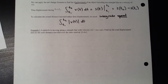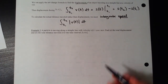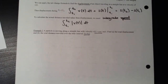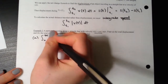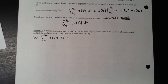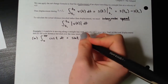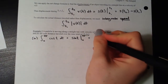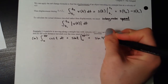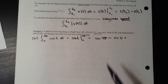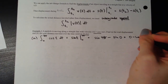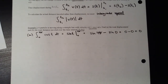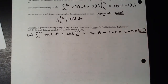Example three: we have a cosine velocity function from 0 to 4π and we want displacement and total distance traveled. For displacement, set up the integral from 0 to 4π of cosine dt. The antiderivative of cosine is sine, evaluated from 0 to 4π. Sine of 4π equals zero, and sine of 0 equals zero. So displacement is zero meters — the particle lands in the same place it started.